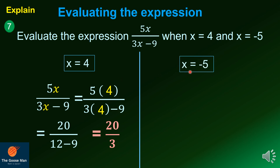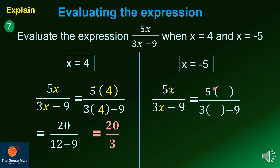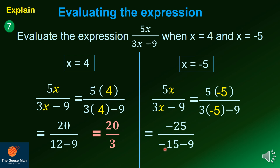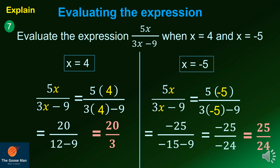On the other hand, if x equals negative 5, substitute into 5x all over 3x minus 9. Since 5 times negative 5 equals negative 25 and 3 times negative 5 equals negative 15, we get negative 25 all over negative 15 minus 9, which is negative 25 over negative 24, or 25 over 24.